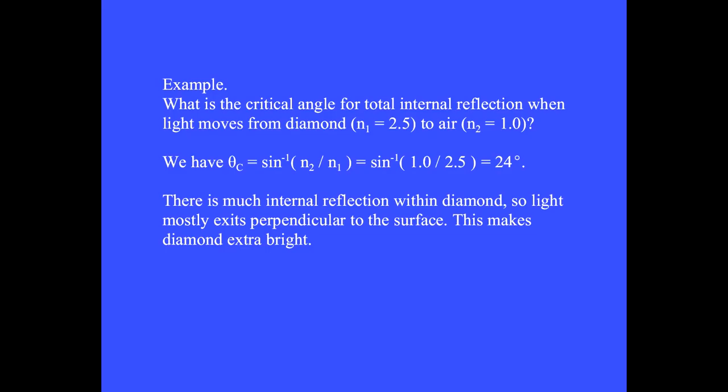For example, what is the critical angle for internal reflection when light moves from diamond, having index N1 equal 2.5, to air, having index N2 equal 1.0? We have the critical angle thetaC is the inverse sine of N2 over N1, which gives 24 degrees.